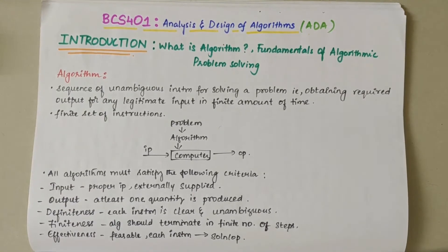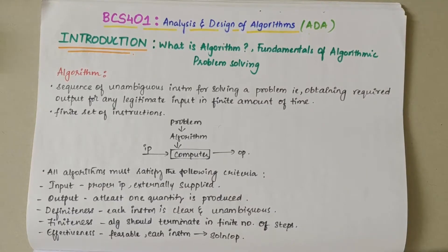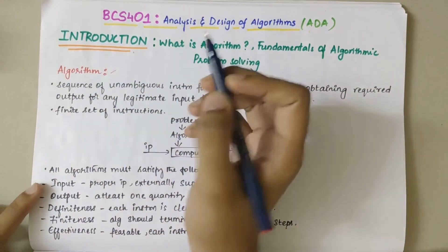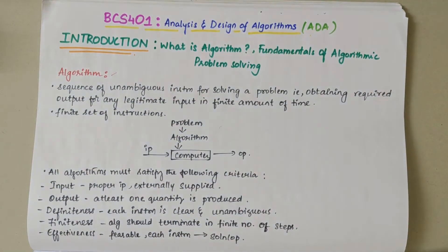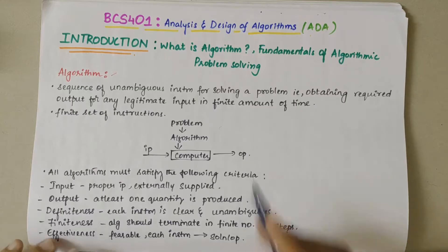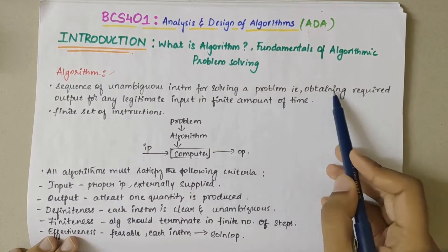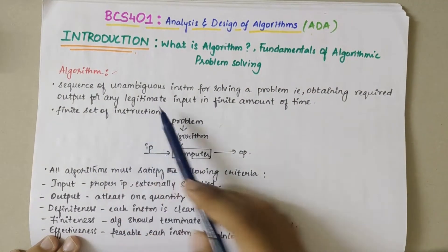In this video we will be discussing the first module from Analysis and Design of Algorithms subject. We will start with the introduction part. First, we have the definition of algorithm. An algorithm is a sequence of unambiguous instructions for solving a problem, that is to obtain the required output from any legitimate input in finite amount of time.